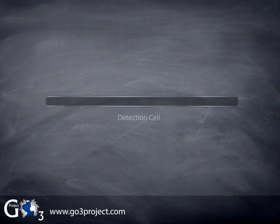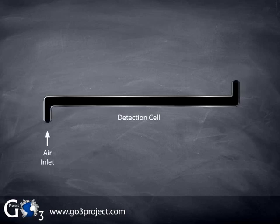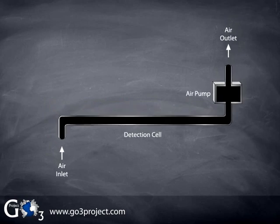To measure ozone in air, we start with the detection cell. This is just a quartz tube that we flow our sample air through. We need an inlet for the air to enter the detection cell and an outlet for the air to exit. Next, we need an air pump to draw the air through the detection cell. This pump works in the same way as an aquarium air pump, except that it uses suction to draw air through the ozone monitor instead of pushing it through.